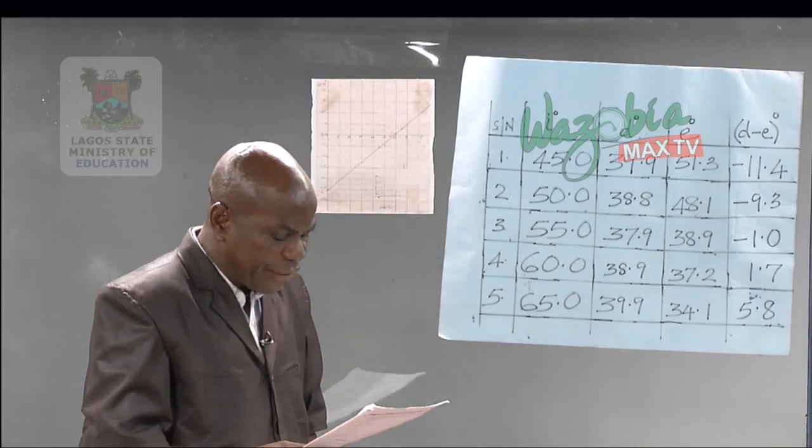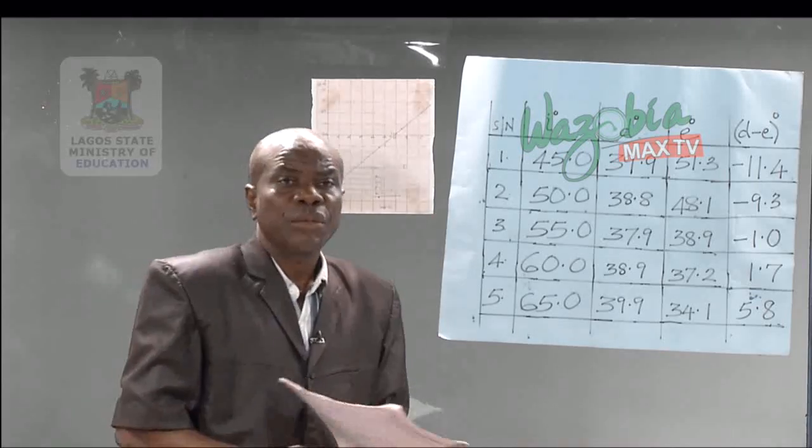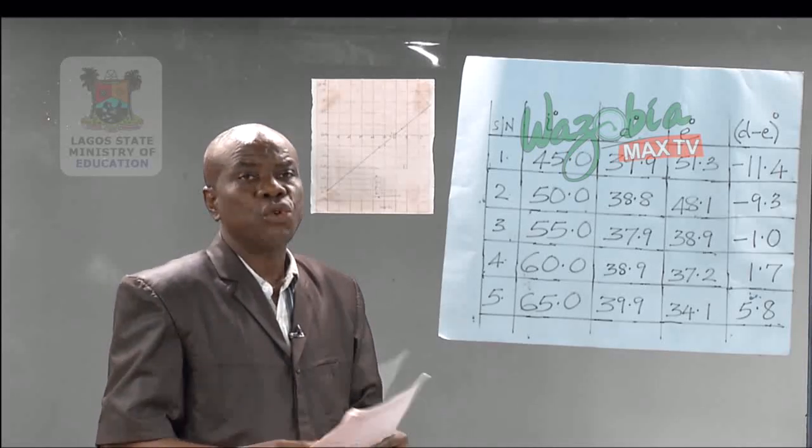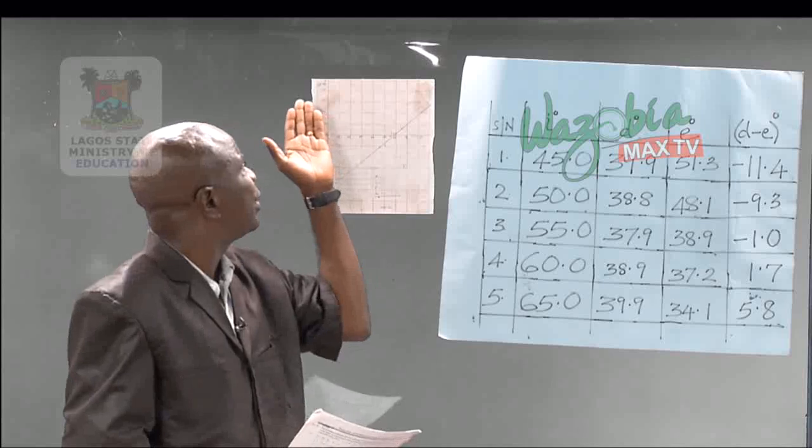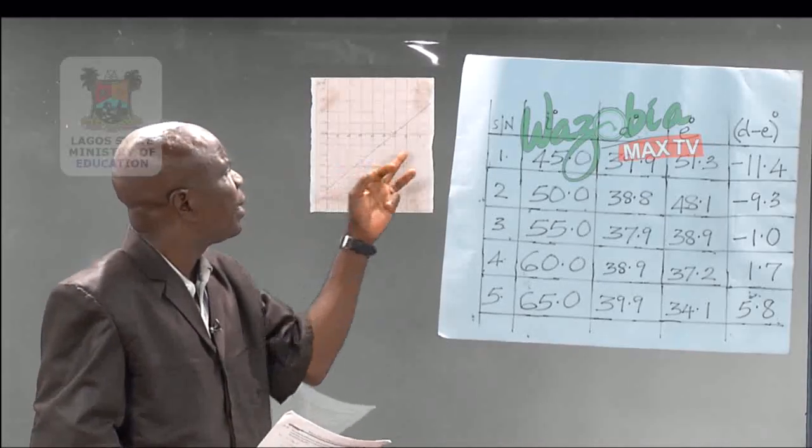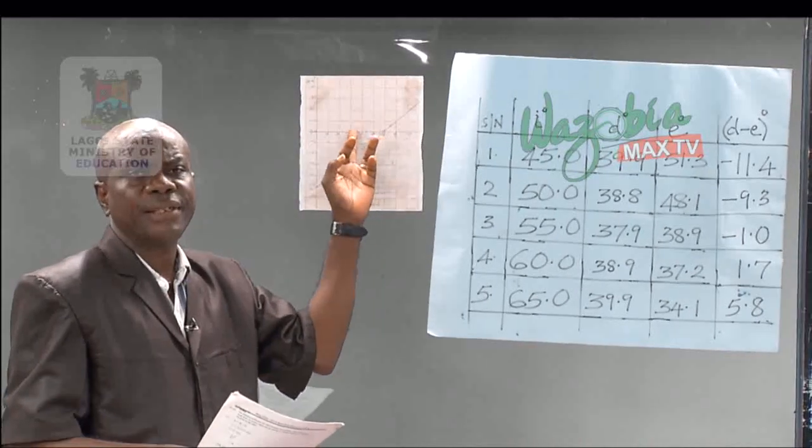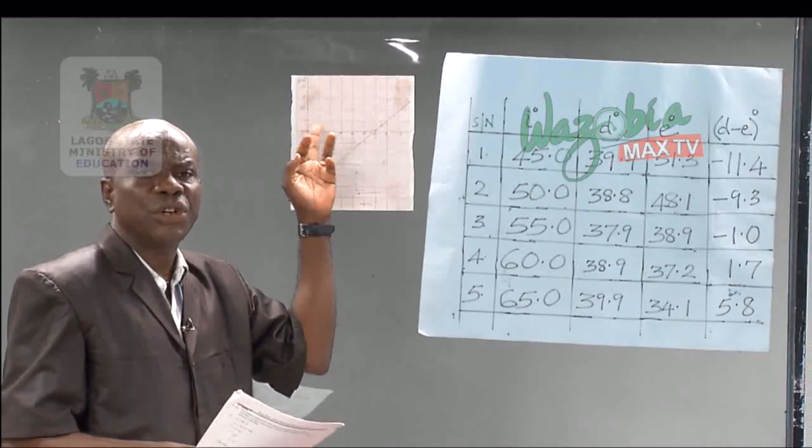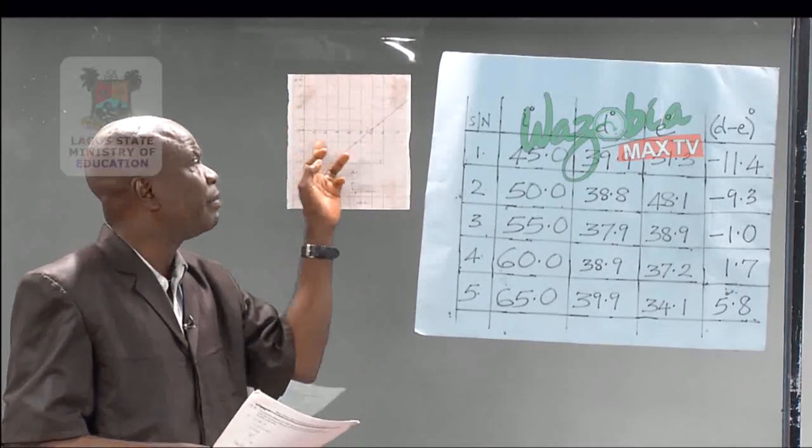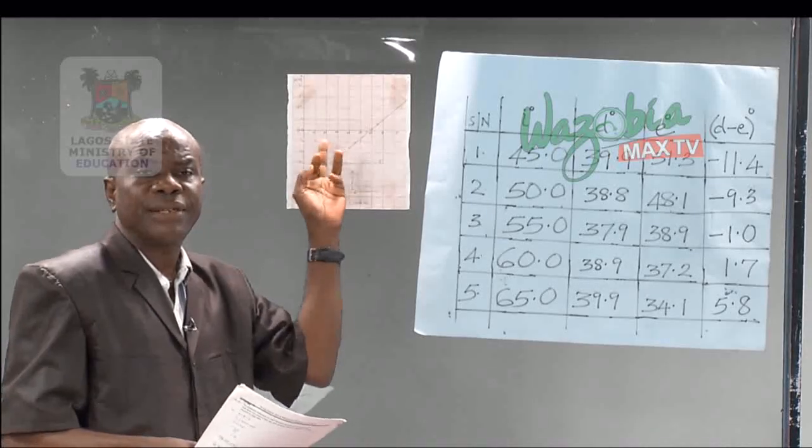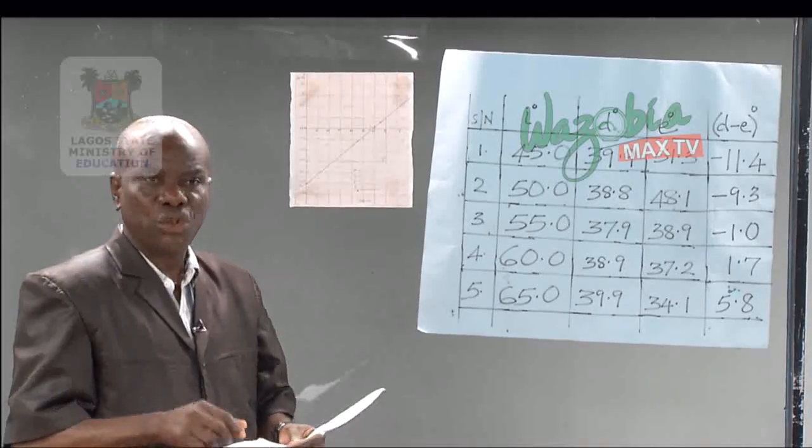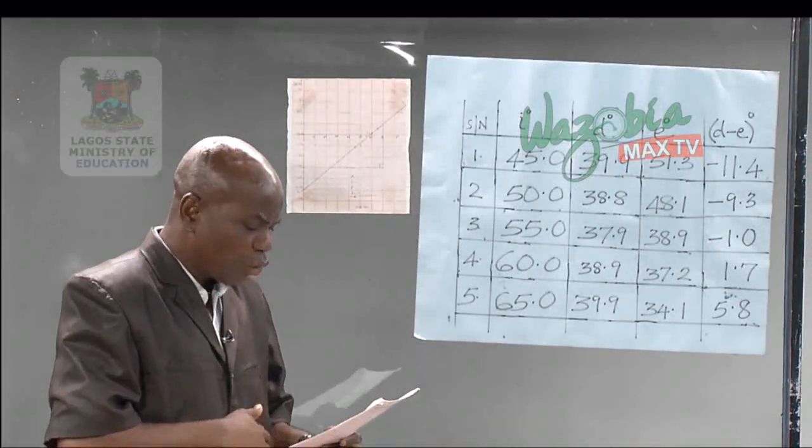Then again, we have disregard of instruction. In a place where a candidate is asked to plot a graph like I have here—this is D minus E on the vertical axis and I on the horizontal axis—if a candidate does otherwise, such a candidate will be penalized for disregard of instruction.